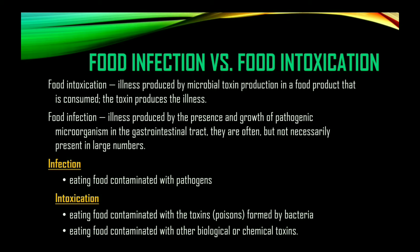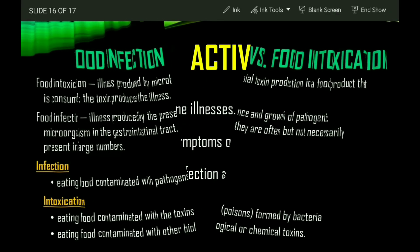Let us summarize the differences. Food intoxication refers to illness produced by microbial toxin production in a food product that is consumed — the toxin itself produces the illness. Food infection, on the other hand, refers to illness produced by the presence and growth of pathogenic microorganisms in the gastrointestinal tract. Infection results from eating food contaminated with pathogens, while intoxication refers to eating food contaminated with toxins or poisons formed by bacteria, or other biological or chemical toxins.